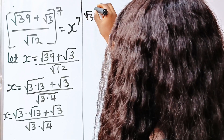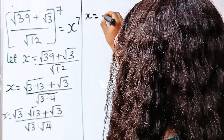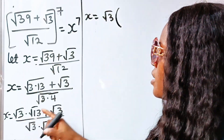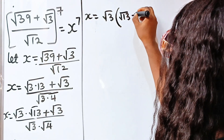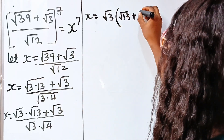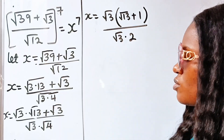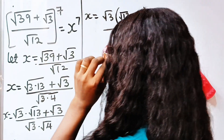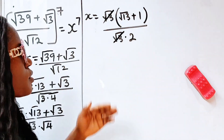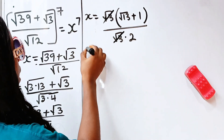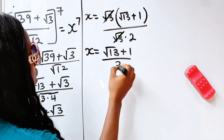If we bring out square root of 3 from the numerator, we get square root of 3 times the quantity square root of 13 plus 1. In the denominator, square root of 4 is 2, so we have square root of 3 times 2. The square root of 3 cancels itself, and we have x is equal to the square root of 13 plus 1, divided by 2.